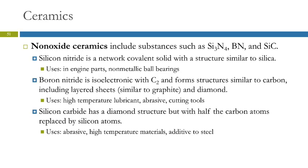Silicon carbide has a diamond structure, but instead of all carbon atoms like diamond, half of the carbon atoms are replaced by silicon atoms. So it's a diamond that's half silicon and half carbon. That changes its appearance and some of its properties; it's useful as an abrasive, in high-temperature materials, and as an additive to steel.